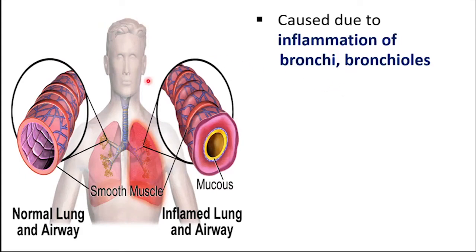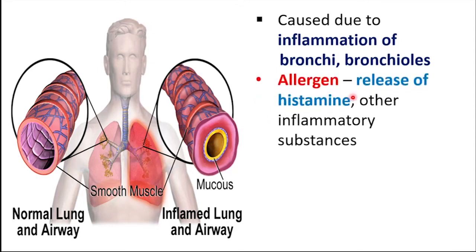Asthma is mainly caused due to inflammation of bronchi and bronchioles. These are the respiratory tubes through which air passes during breathing. When the allergens enter into the body of the person, they trigger the release of histamine and other inflammatory substances from mast cells. Histamine causes vasodilation first. Vasodilation means broadening of the blood vessels.